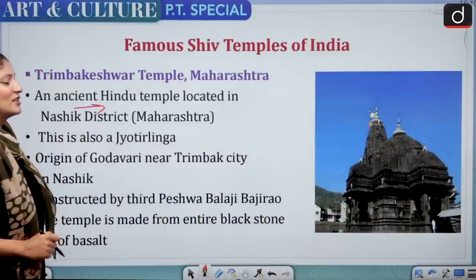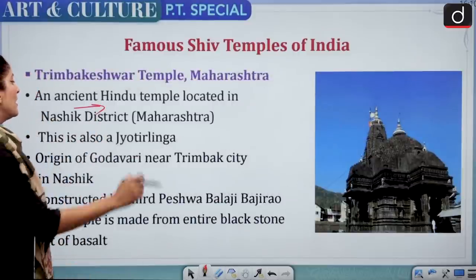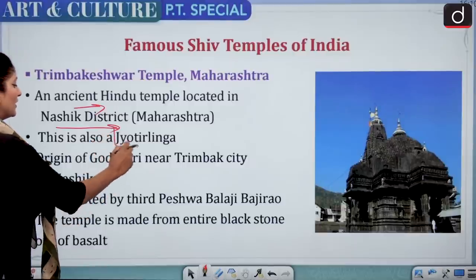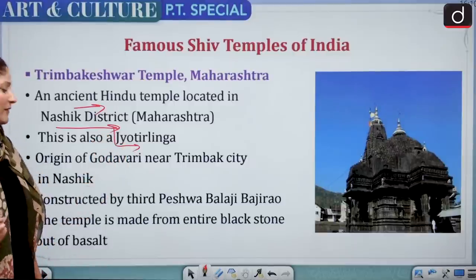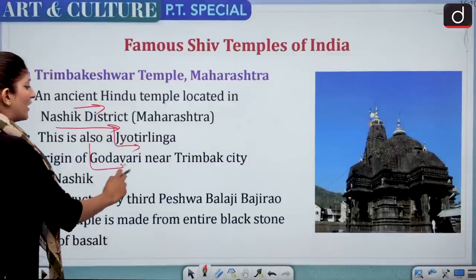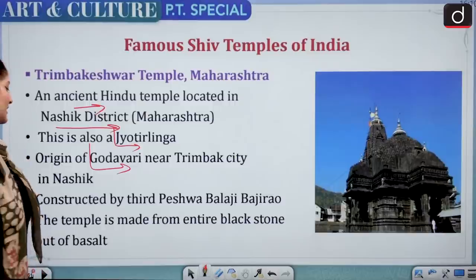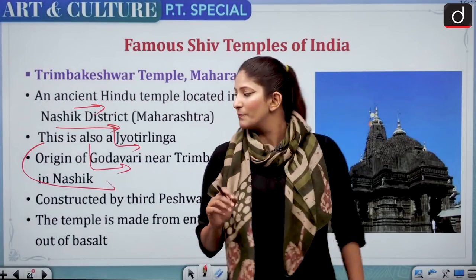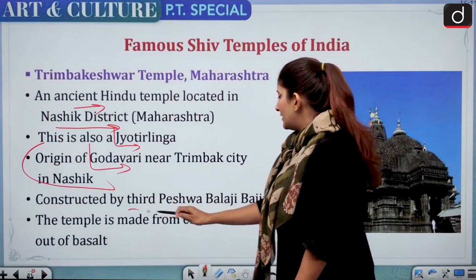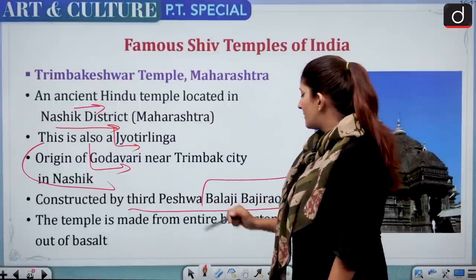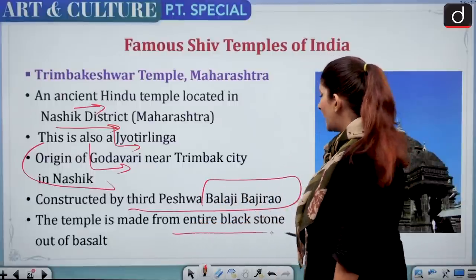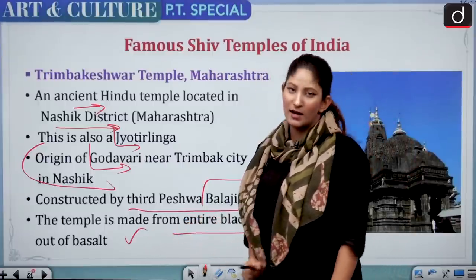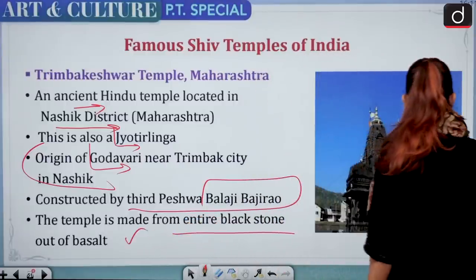Trimbakeshwar Temple of Maharashtra is an ancient Hindu temple located in the Nashik district. It is also one of the 12 Jyotirlingas. The origin of the Godavari River is near the Trimbak city in Nashik — an important preliminary fact. It was constructed by the third Peshwa, Balaji Bajirao. The temple is made entirely from black basalt stone.